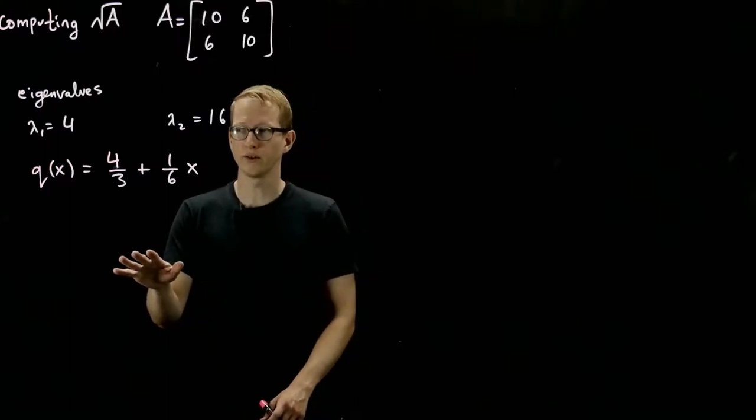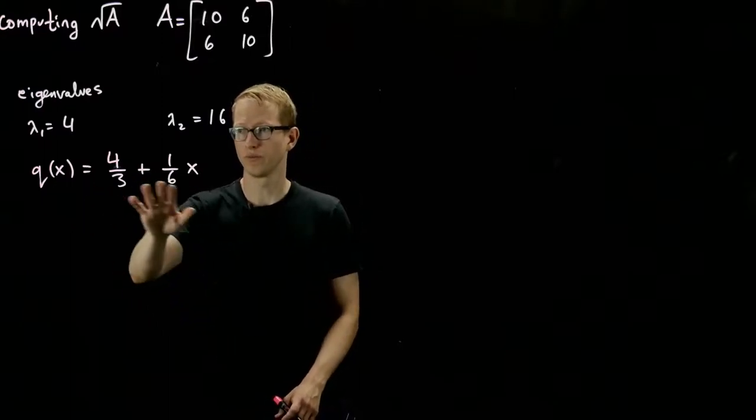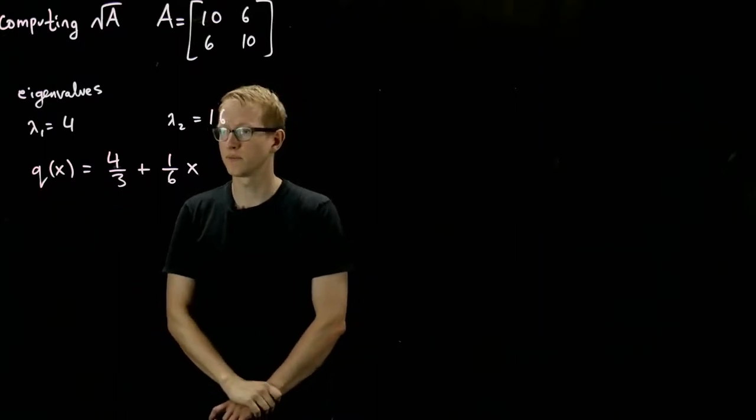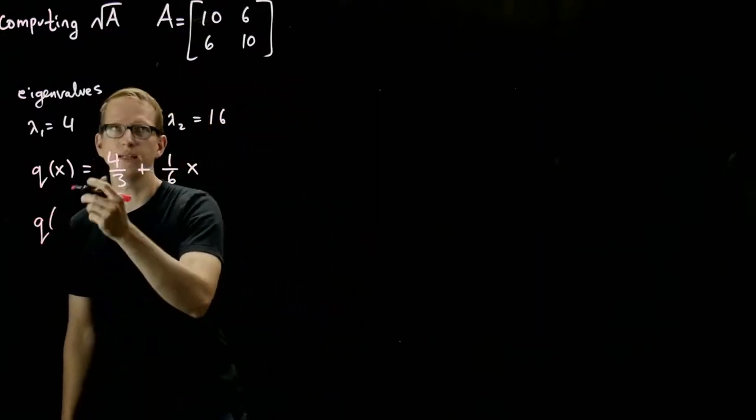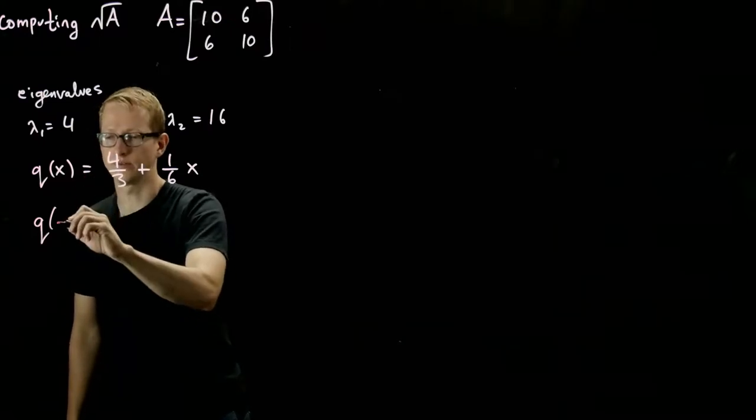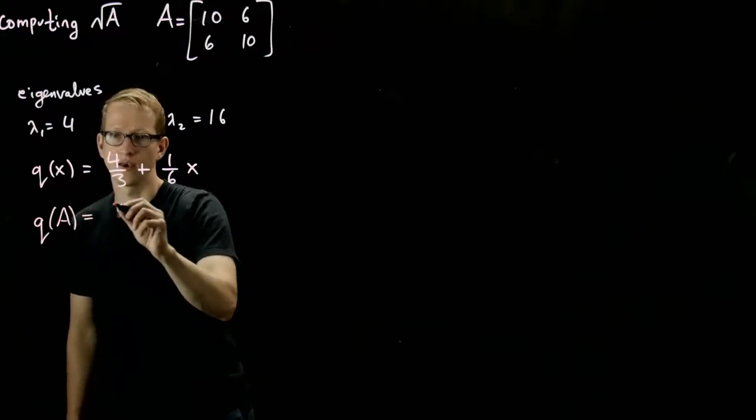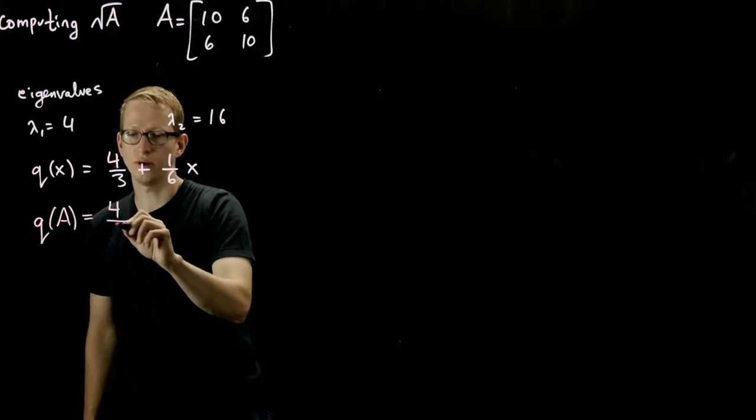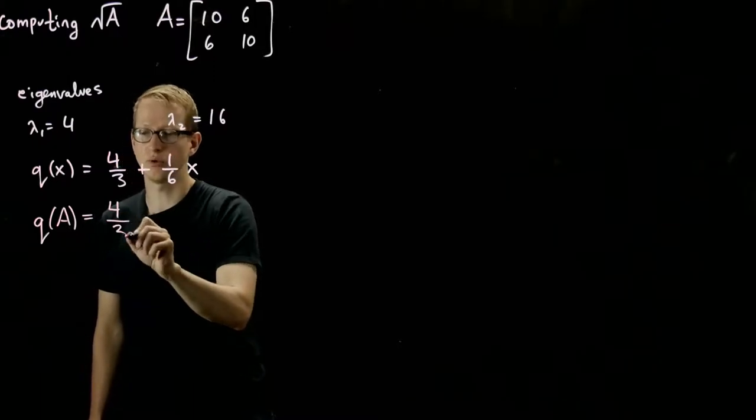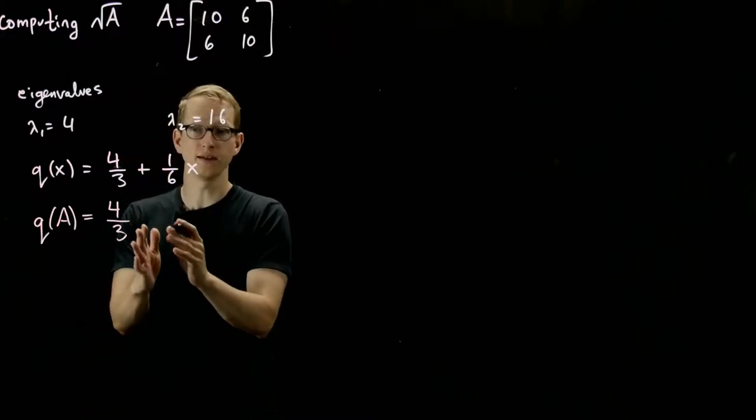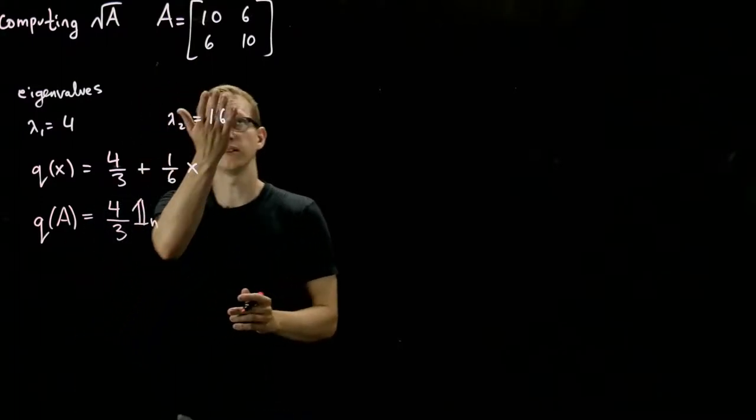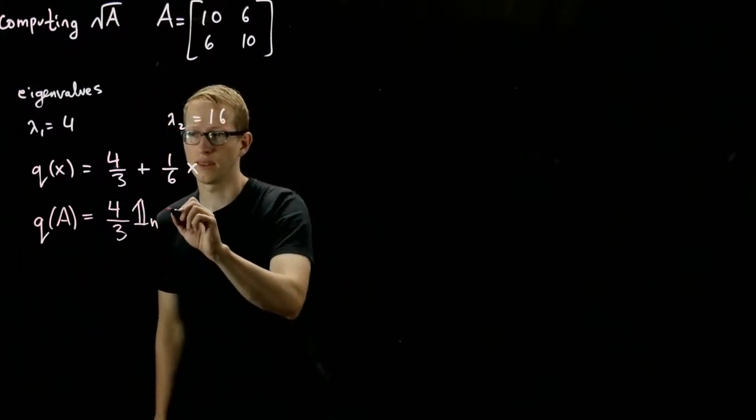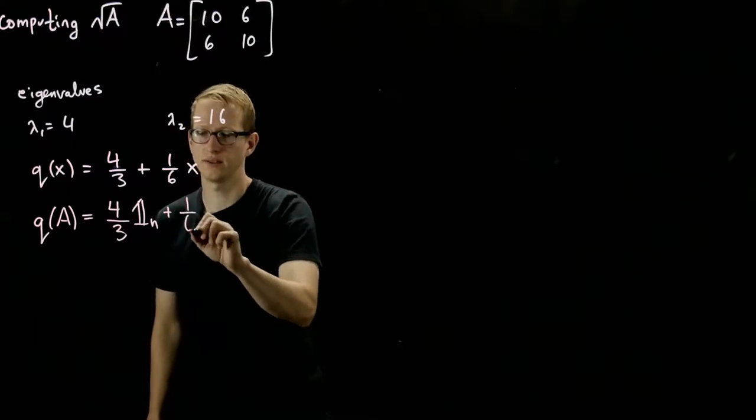So here's the polynomial that we found as a real-valued function. If we wanted to define Q of any matrix A, the associated polynomial on matrices would be 4/3 times the identity matrix, which in this case is a 2 by 2 matrix, plus 1/6 A.